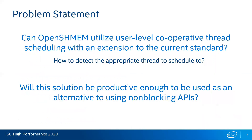From this observation, the problems we try to solve in this work are: can OpenSHMEM utilize user-level cooperative thread scheduling with an extension to the current standard? While solving this, we want to detect the appropriate thread to schedule during application execution. We also tried to see whether this solution would be productive enough to be used as an alternative to using non-blocking APIs.